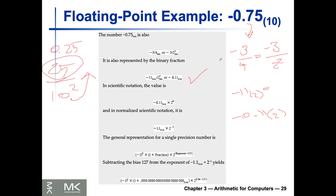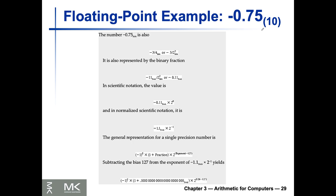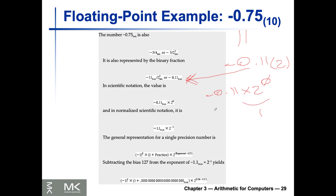So now we know that minus 0.75 in base 10 equals minus 0.11 in base 2. Now we can represent it in floating-point form. We add — multiply by 2 to the power of 0, which doesn't change anything — just changing the representation. We have to make sure we normalize it. By normalization, I mean only one leading digit. So it would become minus 1.1 multiplied by 2 to the power of minus 1, because we shift it one to the right.